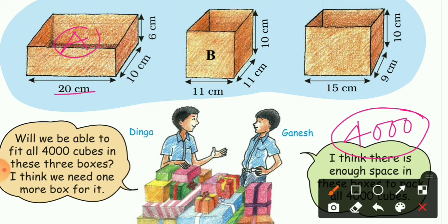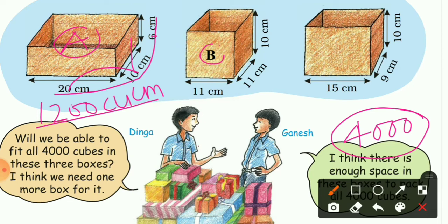We need to check which box can fit all 4000 cubes. For Box A, since it is a cuboid, its volume = length × breadth × height = 20 × 10 × 6. That gives 200 × 6 = 1200 cubic centimetres. So Box A alone is not enough because we need to fit 4000 cubes and its volume is only 1200.